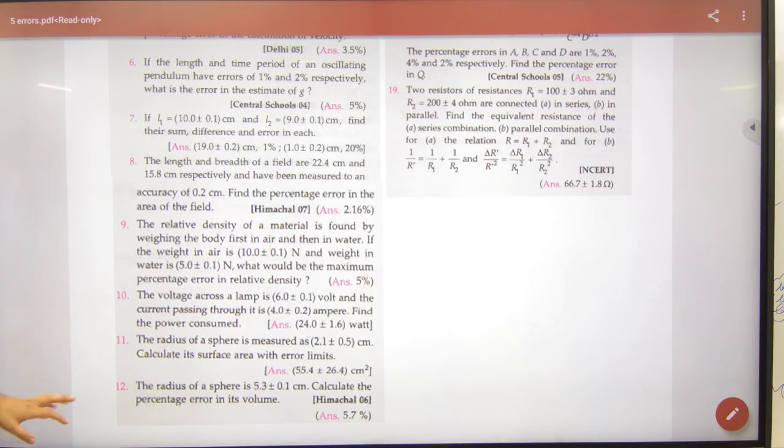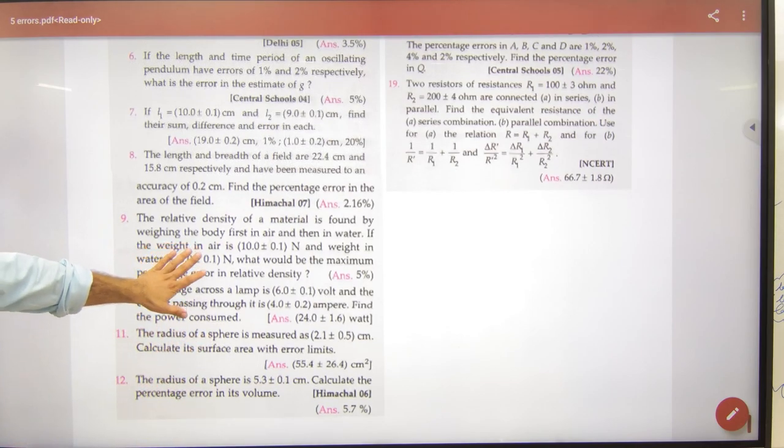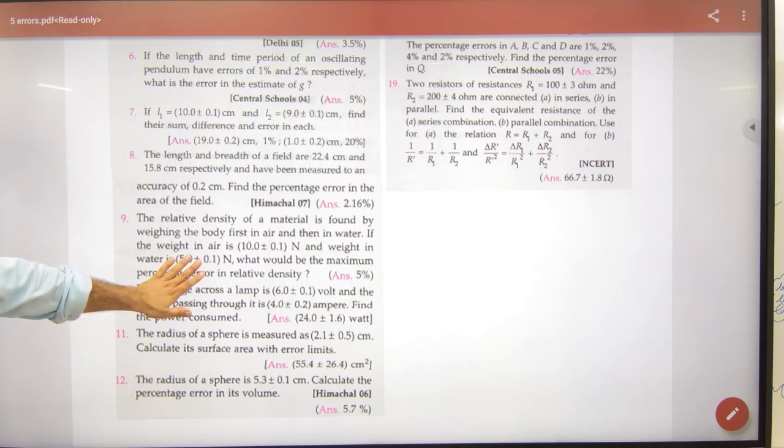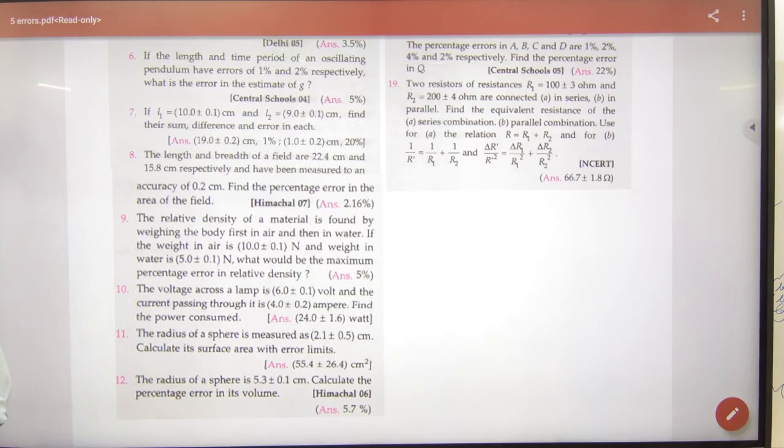Next question number nine. Nine mein thoda hai trick. To aapne formula kya use kiya ninth mein relative density ka? Nain? Usse answer ni ha raha? Usse 3% aayega, 5% ni aayega?